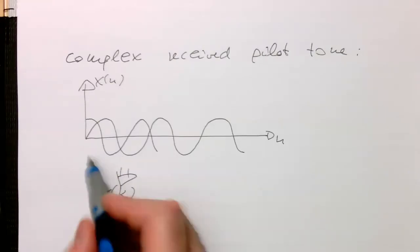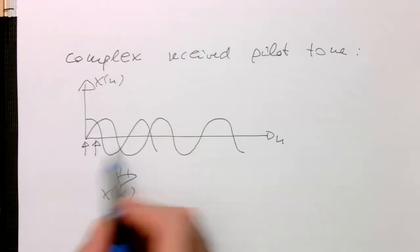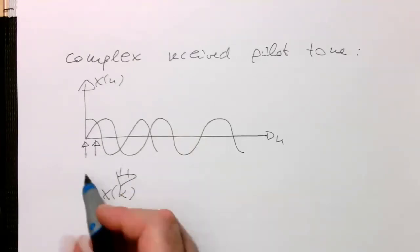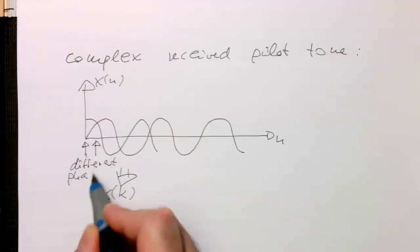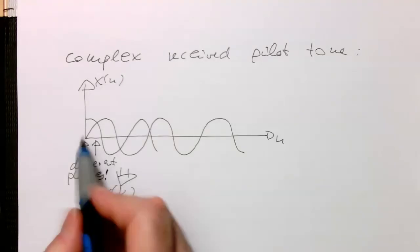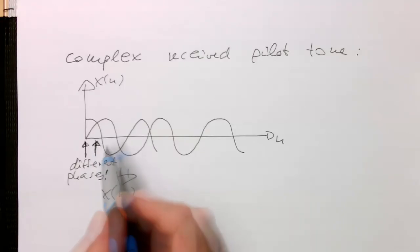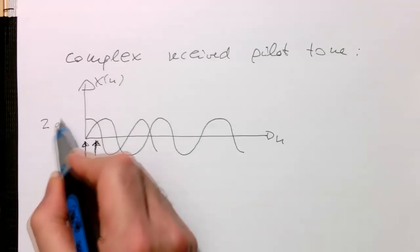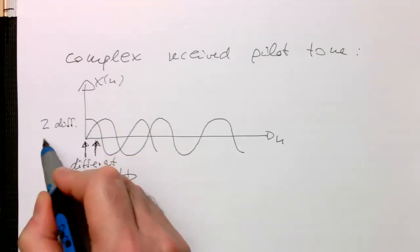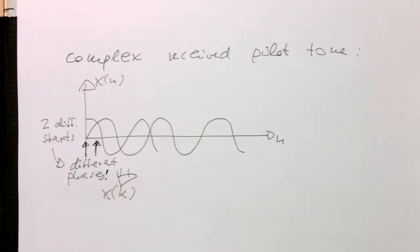And so, if we have a detection - if we're detecting the start here, or if we're detecting the start here - this would give different phases. So, this is start position, and that's start position. Two different starts, and they lead to different phases.